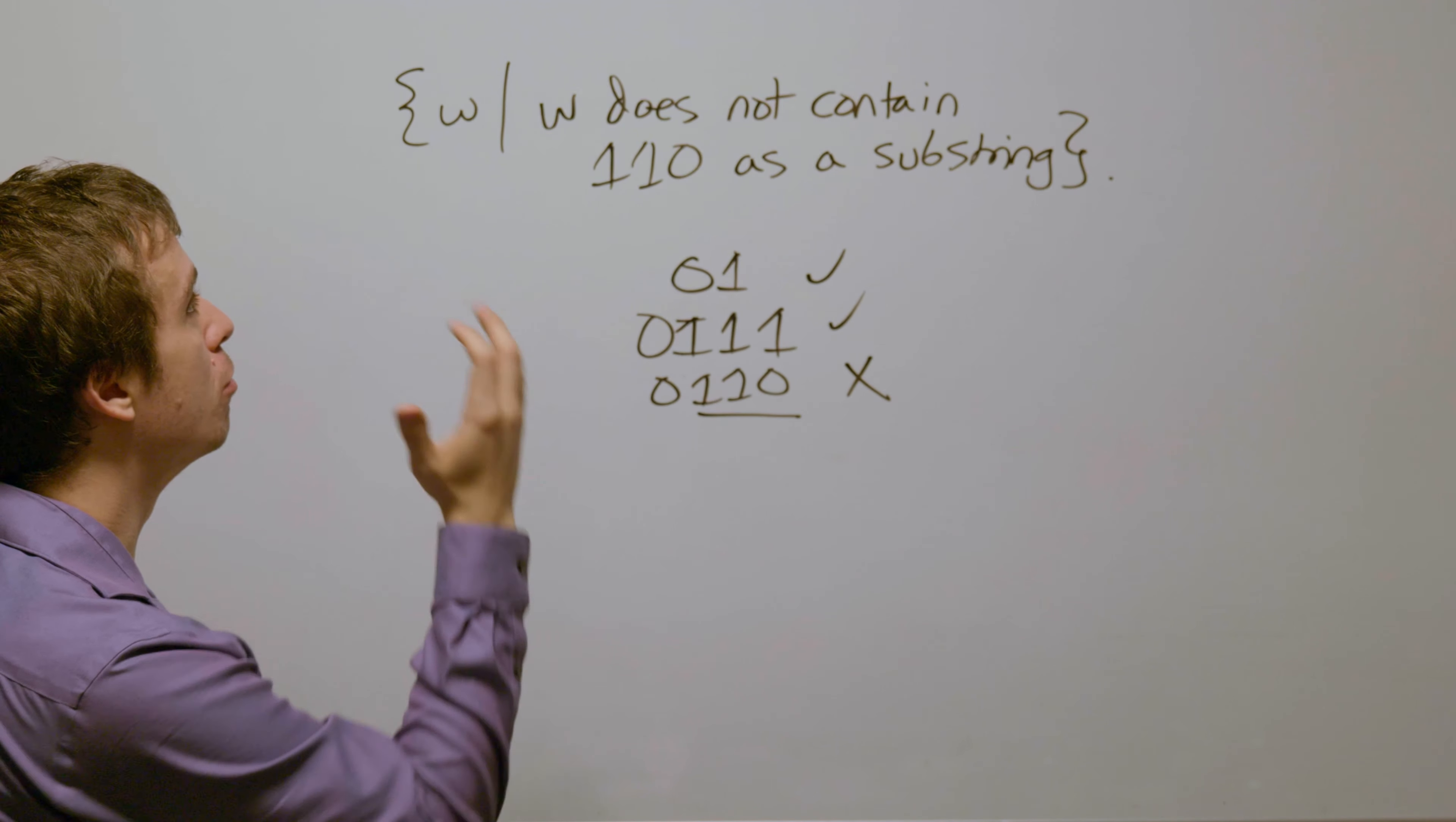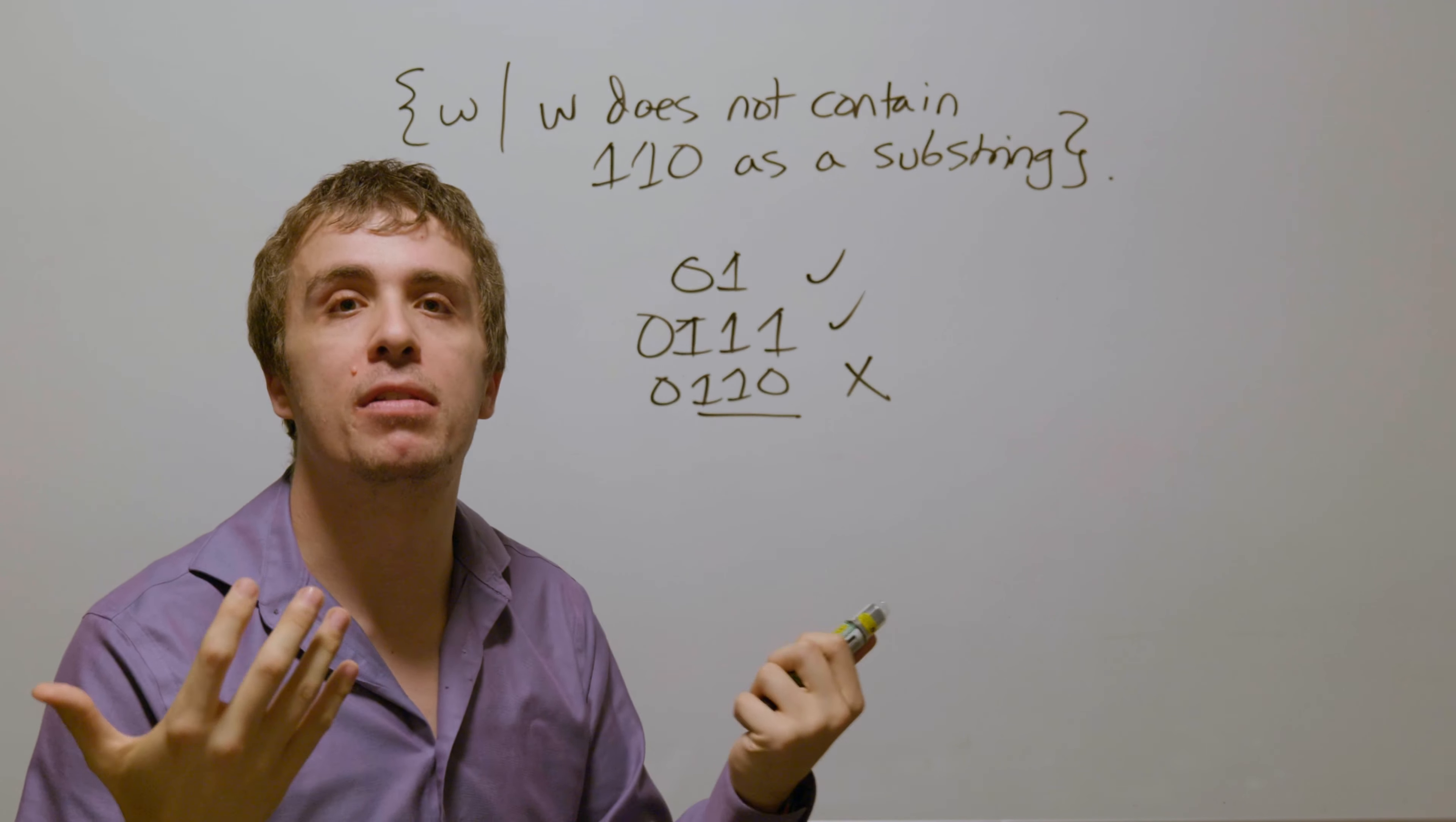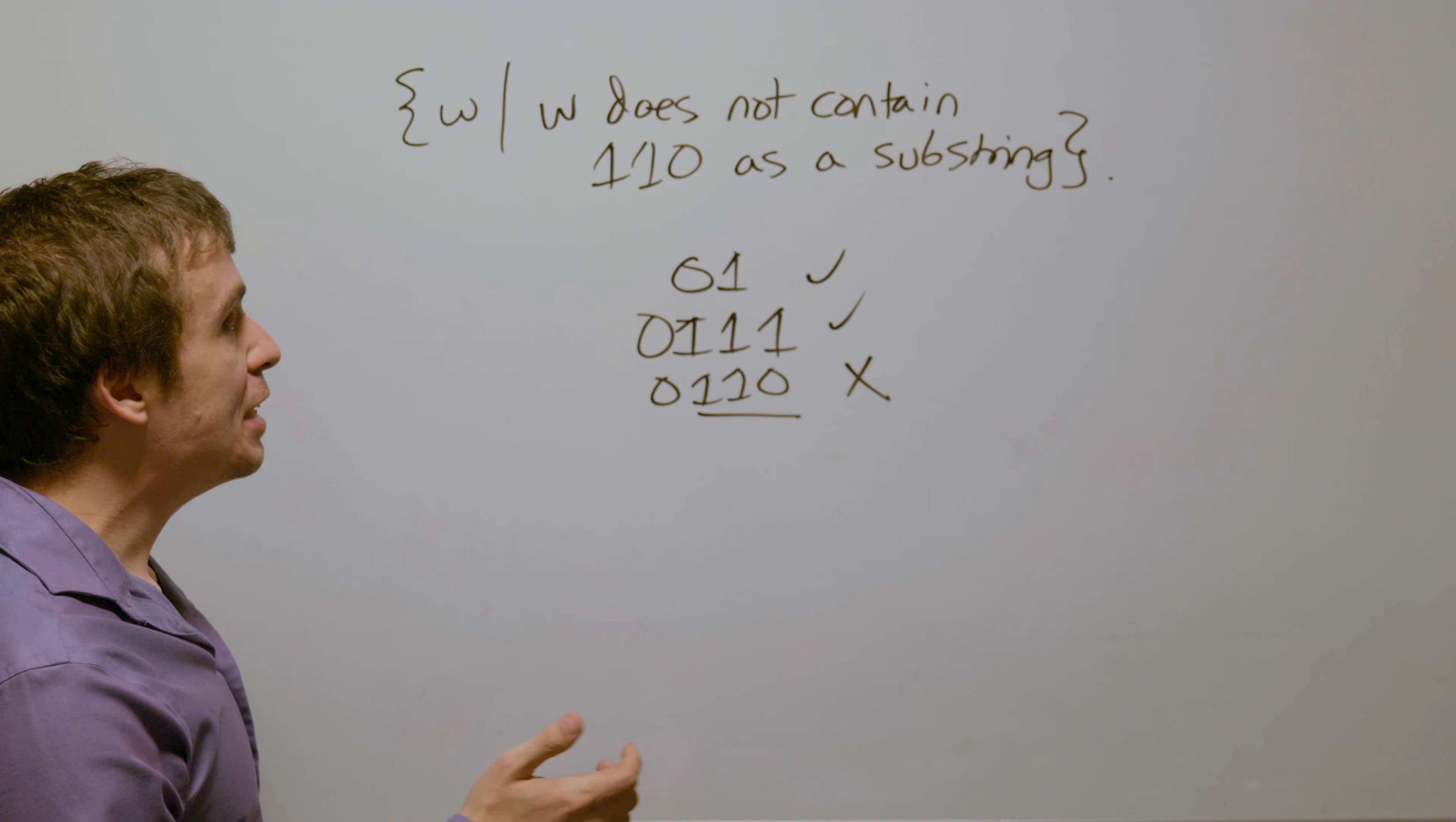So how are we going to make a DFA for this? It seems like 'does not contain' means that there are so many different combinations. It turns out that it's really easy because we're dealing with deterministic finite automata. What we do is notice the fact that if we remove the word 'not' here, it turns out to be a lot easier. And why is that easier?